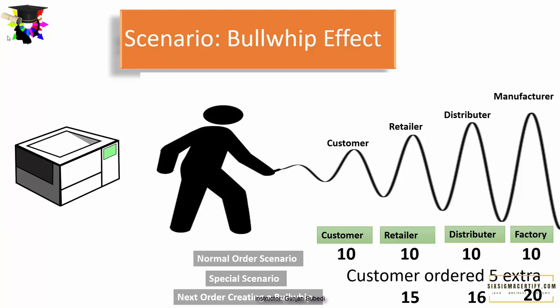There was a special case where customers ordered 5 extra printers. In the next forecast, the distributor thought the customer would order at least 15 photocopy machines, so to avoid losing stock, it ordered 16 from the factory. The factory, to avoid low stock, started producing 20. But what if the next time demand returned to 10 units again? There will be huge fluctuations in inventory and demand for the machines.